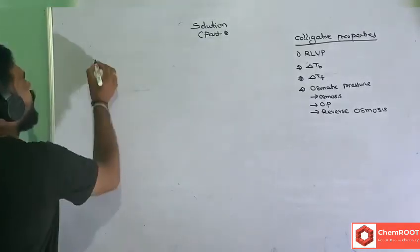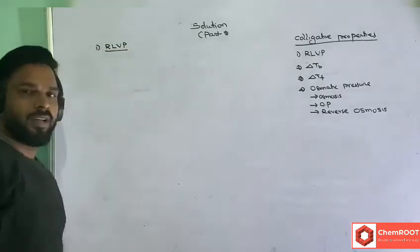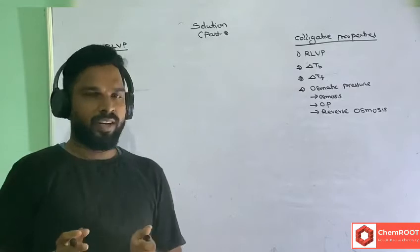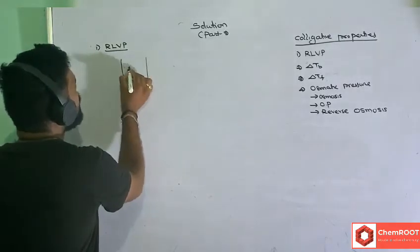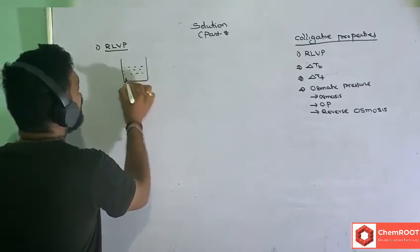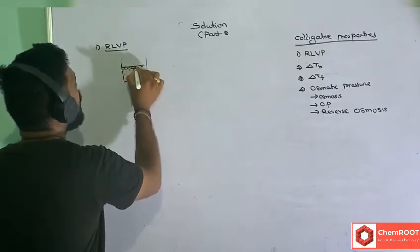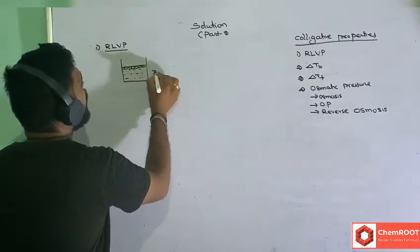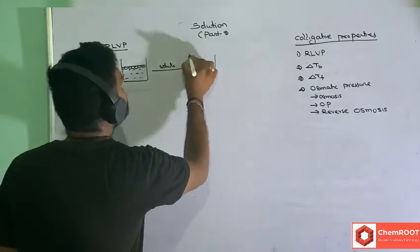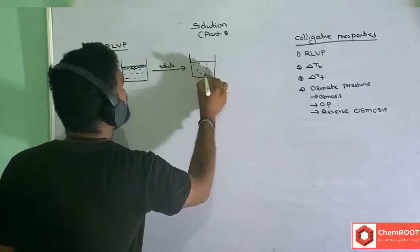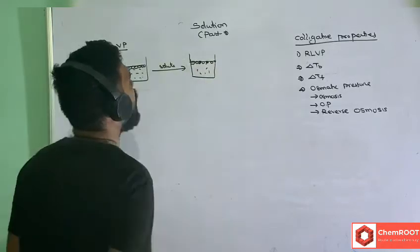First one: relative lowering of vapor pressure. When you are adding a non-volatile solute to the solvent, all solvent particles are present on the surface and vapor pressure is determined by those surface particles. When you add solute particles, some of the surface particles will be replaced with the non-volatile solute.